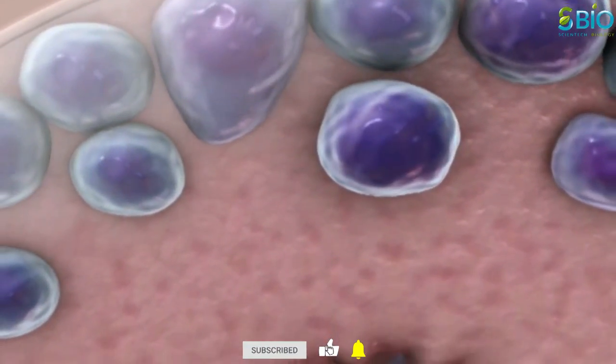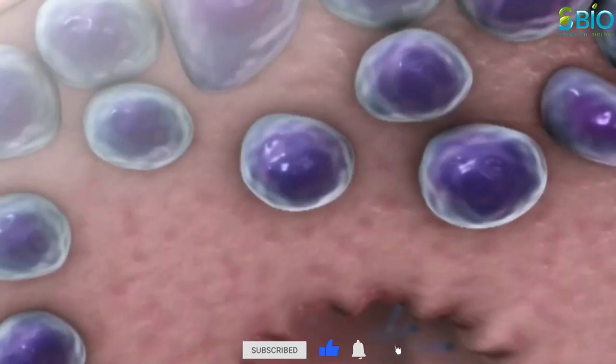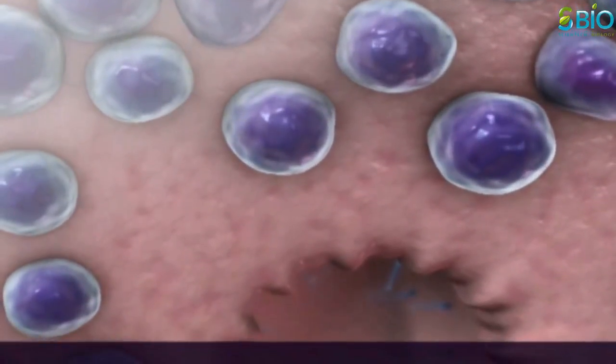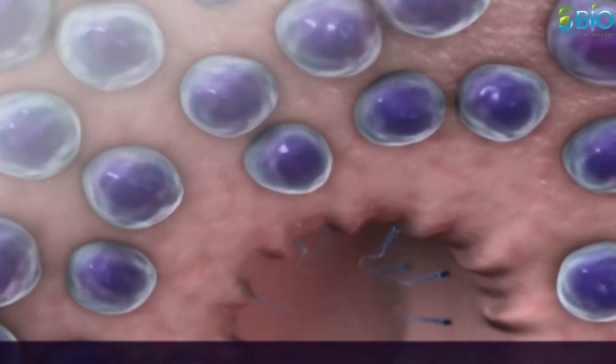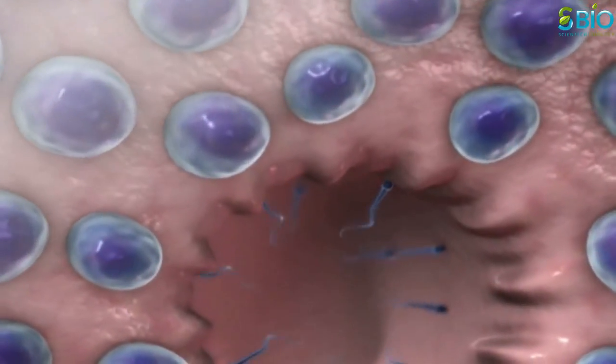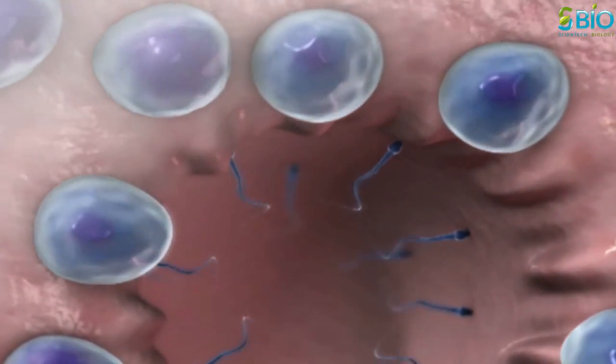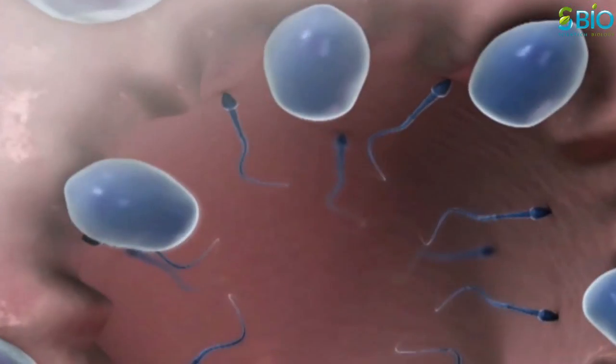These cells divide by meiosis to become 23 chromosome cells called secondary spermatocytes and then into spermatids. The multi-step process called spermatogenesis produces the 23 chromosome containing immature sperm cells that mature in the epididymis.